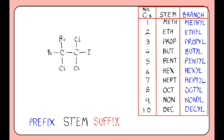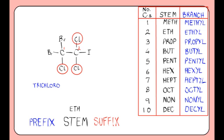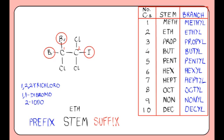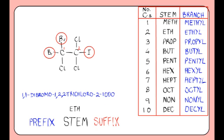Finally, we'll end with this complicated one. It has a 2-carbon chain, so the stem is 'eth'. There are two chlorines on position 2 and one on position 1, so because there are three chlorines altogether, we say 1,2,2-trichloro. Then we have two bromines on position 1, so that becomes 1,1-dibromo. And there is an iodine on position 2. Placing these groups in alphabetical order: bromines first, then chlorines, then iodine. The compound is a halogenoalkane, so the suffix is '-ane'. The compound is 1,1-dibromo-1,2,2-trichloro-2-iodoethane.